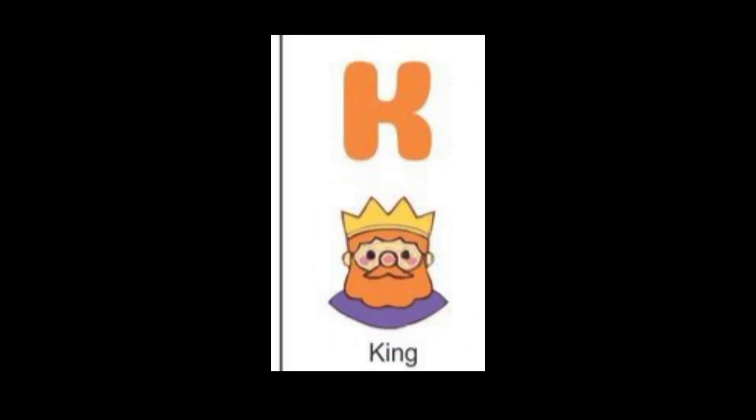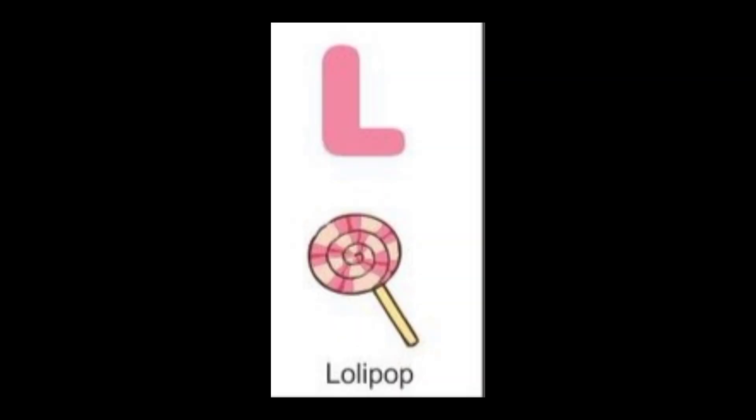The next letter is K. K for king. And the color of king is orange. The next letter is L. L for lollipop. The color of lollipop is pink.